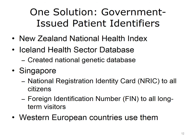While the issue of national health identifiers is somewhat controversial in the U.S., it's actually a non-issue in most other industrialized countries. In New Zealand, there's a National Health Index used for all health purposes, with a website describing why it exists and how privacy is protected. Iceland has a national identifier and its health sector database is home to many genetic studies, including a national genetic database. In Singapore, all citizens have a national registration identity card and long-term visitors get a foreign identification number. Most Western European countries also use national patient identifiers without much controversy.